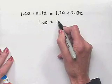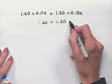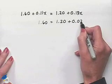From the right, we'll subtract 11 hundredths X from 13 hundredths X. That will give us .02X.